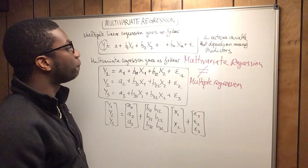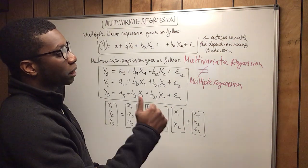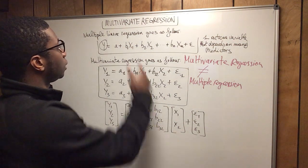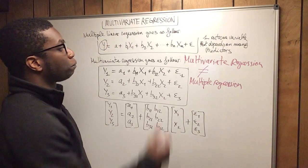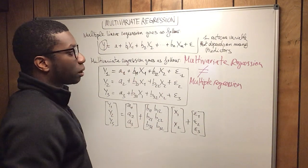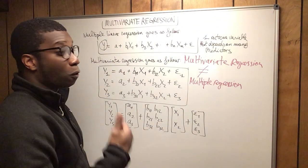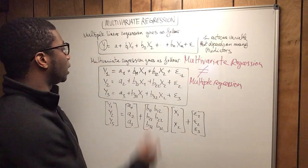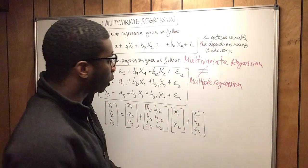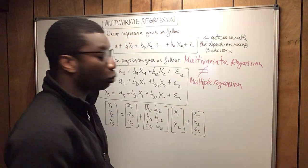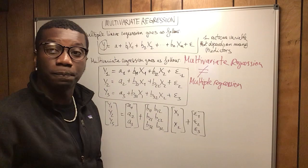Remember: one outcome variable that depends on many predictors is the multiple linear regression. Many outcome variables that depend on one or many predictors is the multivariate regression. Thank you guys for listening. That was a quick video, and I'll see you next time.